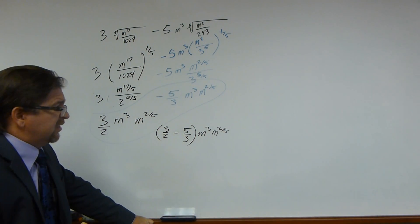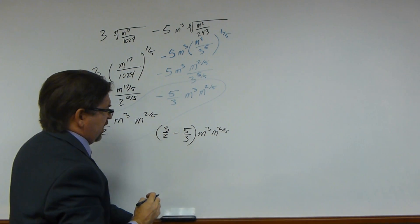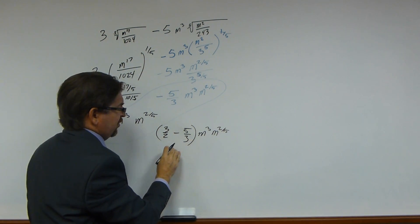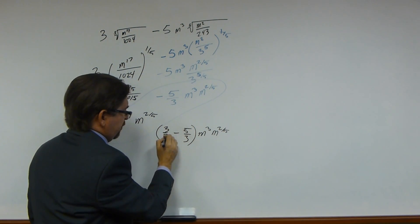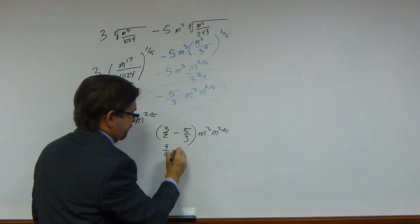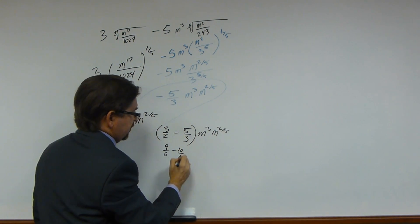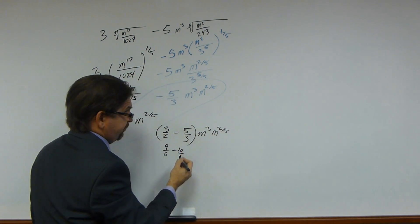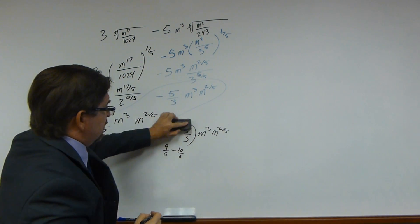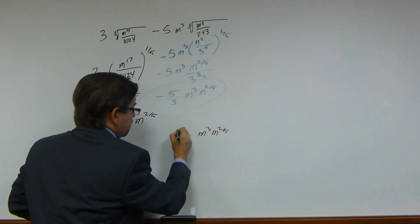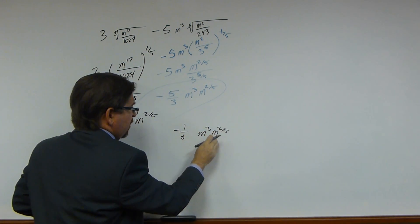Okay, we now have a single term. Let's simplify this. The greatest common denominator here is going to be 6, 2 times 3. Multiply this times 3, you get 9 over 6. Multiply this times 2 over 2, you get 10 over 6. 9 minus 10, you get negative 1. So what we get is minus 1 sixth, m to the 3rd, m to the 2 fifths.